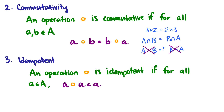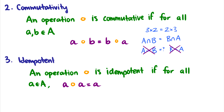Idempotency: an operation is idempotent if for every a, using the operation on itself gives itself back: a ∘ a = a. Intersection is idempotent: A ∩ A = A. Similarly A ∪ A = A, so union is also idempotent. However, multiplication is not: 3 × 3 = 9, not 3. So multiplication under the real numbers and integers is not idempotent.